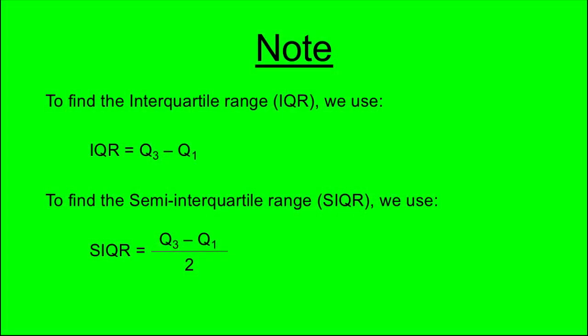To find the interquartile range, IQR, we use IQR equals Q3 subtract Q1.